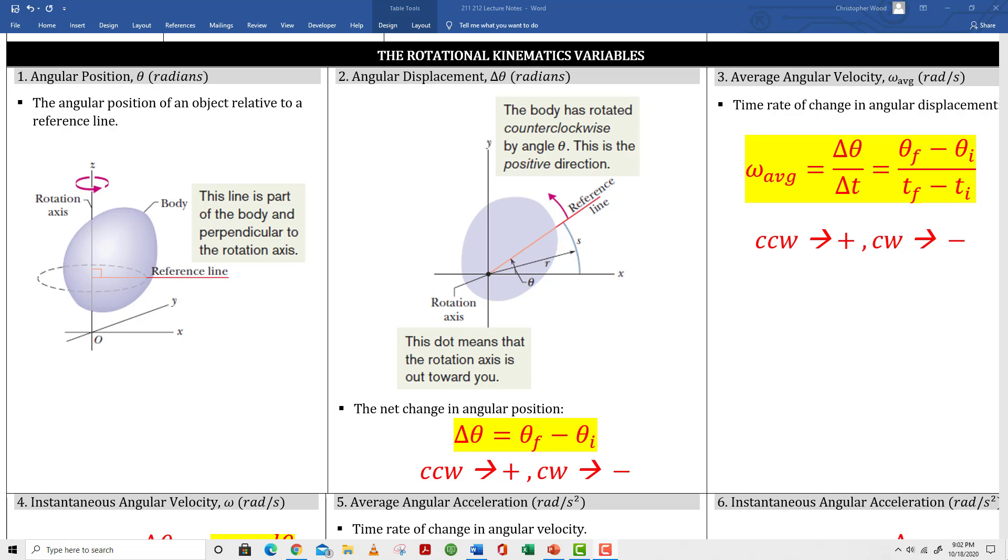Special note, CCW means counter-clockwise. Unless otherwise noted, anything that moves counter-clockwise will be taken as positive. Anything that moves clockwise will be taken as negative.